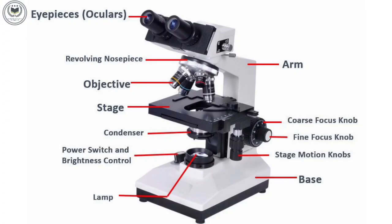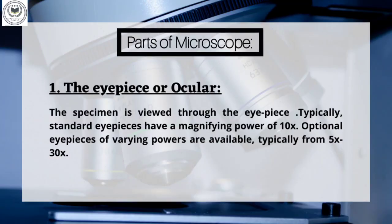This is the diagram of a microscope with all its parts labelled. Part 1: The eyepiece or ocular. The specimen is viewed through the eyepiece. Typically, standard eyepieces have a magnifying power of 10x. Optional eyepieces of varying powers are available, typically from 5x to 30x.